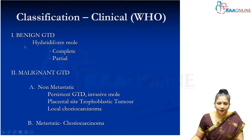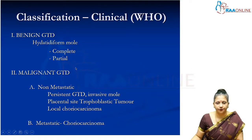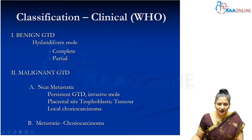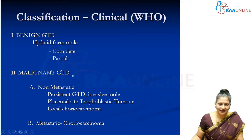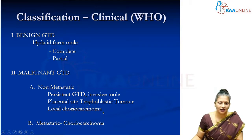Gestational trophoblastic disease can be benign or malignant. The benign variety is called hydatidiform mole, which can be complete or partial. Among malignant GTD, we classify as non-metastatic and metastatic. Metastatic malignant GTD is called choriocarcinoma, while non-metastatic malignant GTD includes invasive mole, persistent GTD or persistent mole, placental site trophoblastic tumor, and local choriocarcinoma.